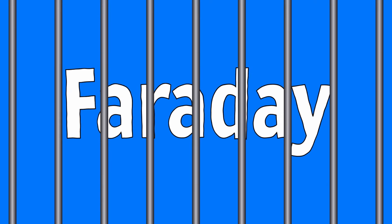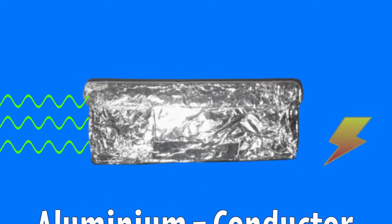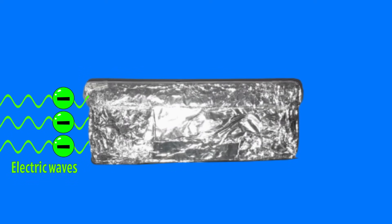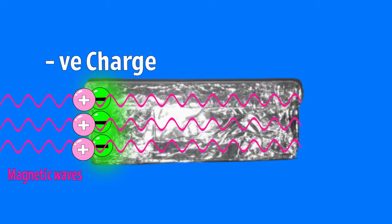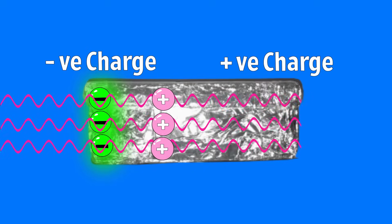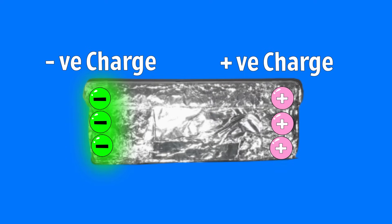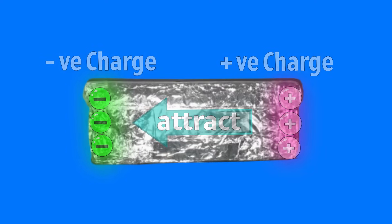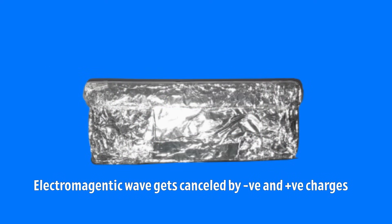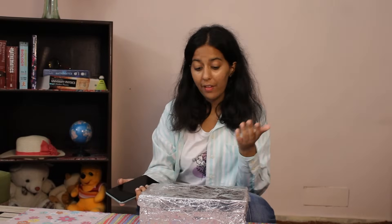Here's how a classic Faraday cage works: aluminum is a conductor of electricity, so the electric waves carrying the negative charge stick to the surface of the box, forming a somewhat negative charge on one end. The magnetic waves push the positive charge, but since negative charge attracts positive charge, the positive charge can't go very far — the negative charge attracts the positive, causing an accumulation of positive charges on the other end, and hence canceling the entire electromagnetic wave.